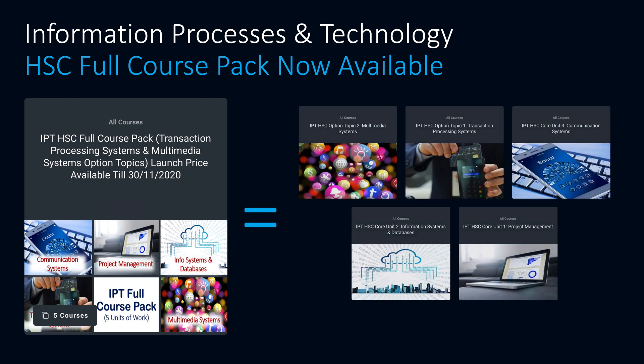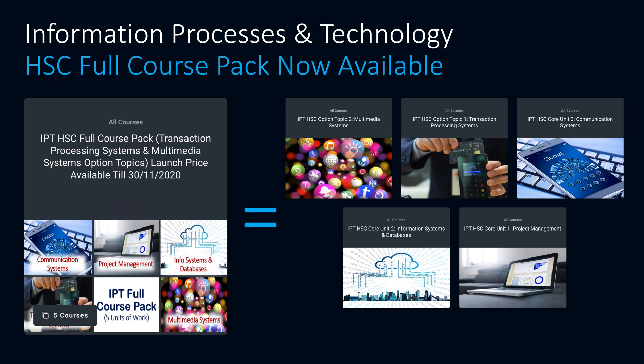It's made up of five IPT units: the three core topics of project management, information systems and databases, and communication systems, and the two option topics of multimedia systems and transaction processing systems. Sorry for those students who do decision support systems and automated manufacturing systems — I haven't taught those units myself, so I won't be putting anything together for those two.